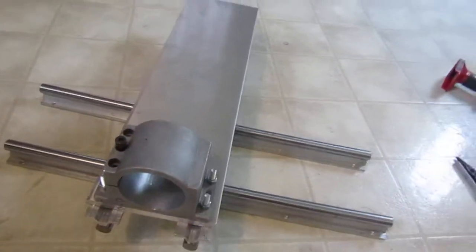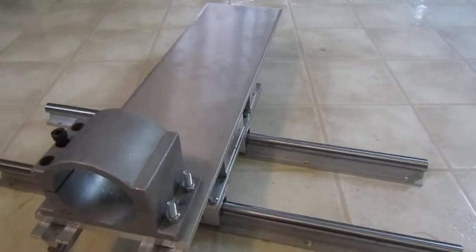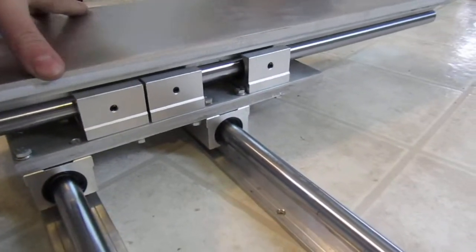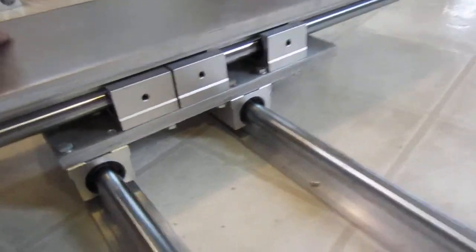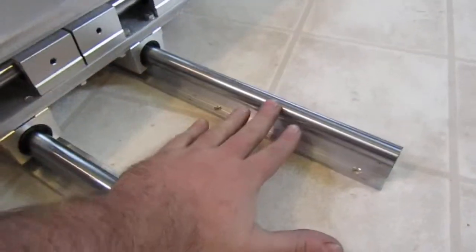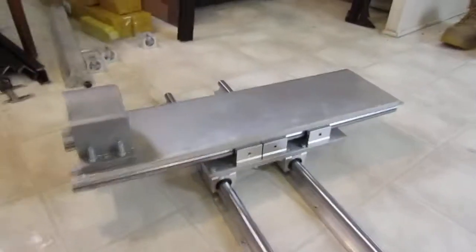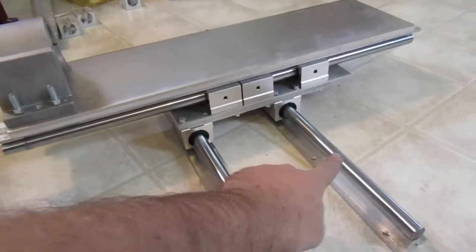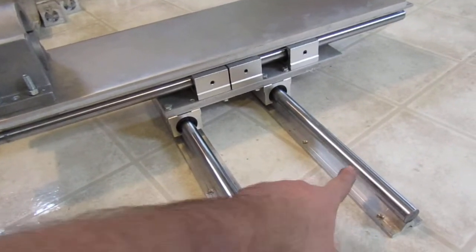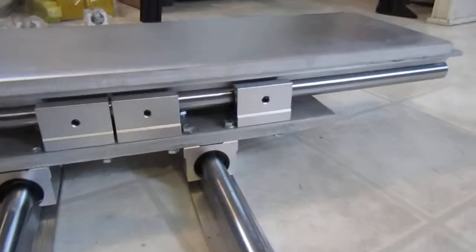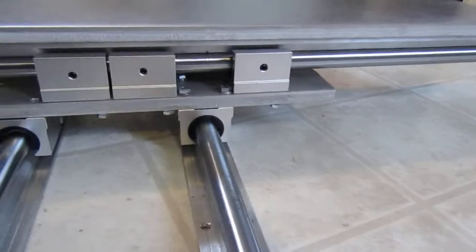All right guys, I've been working on the CNC machine. This is the X carriage, or well the Z carriage—I mean, X and Z. So these two are the X axis, and this is the Z axis.